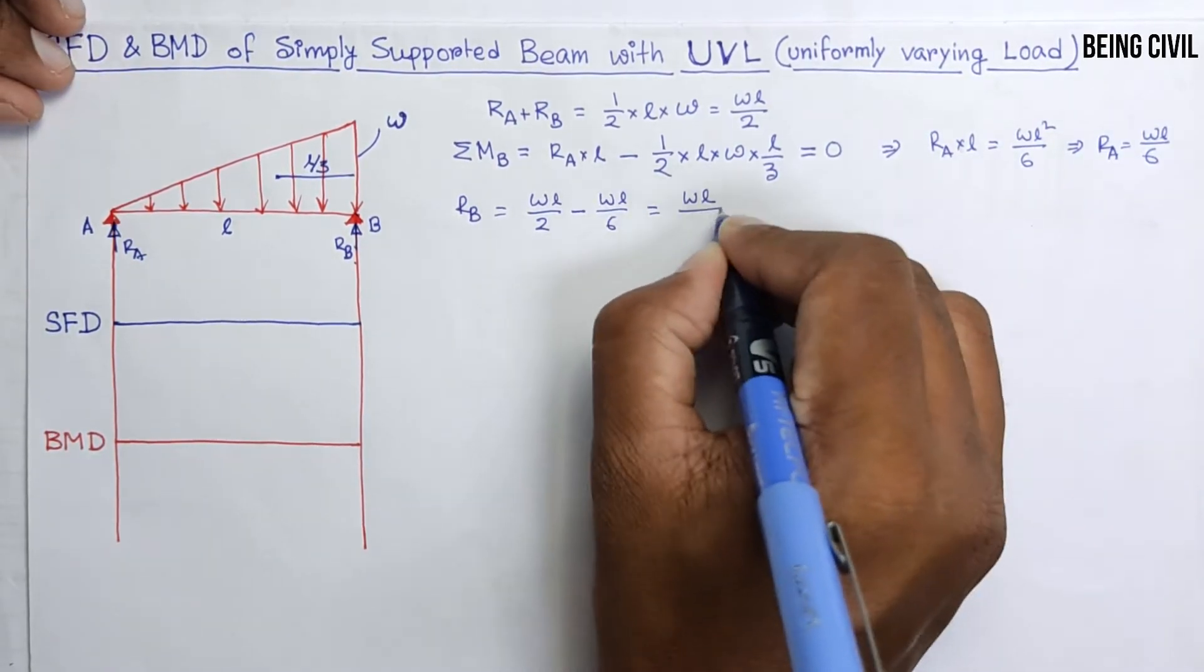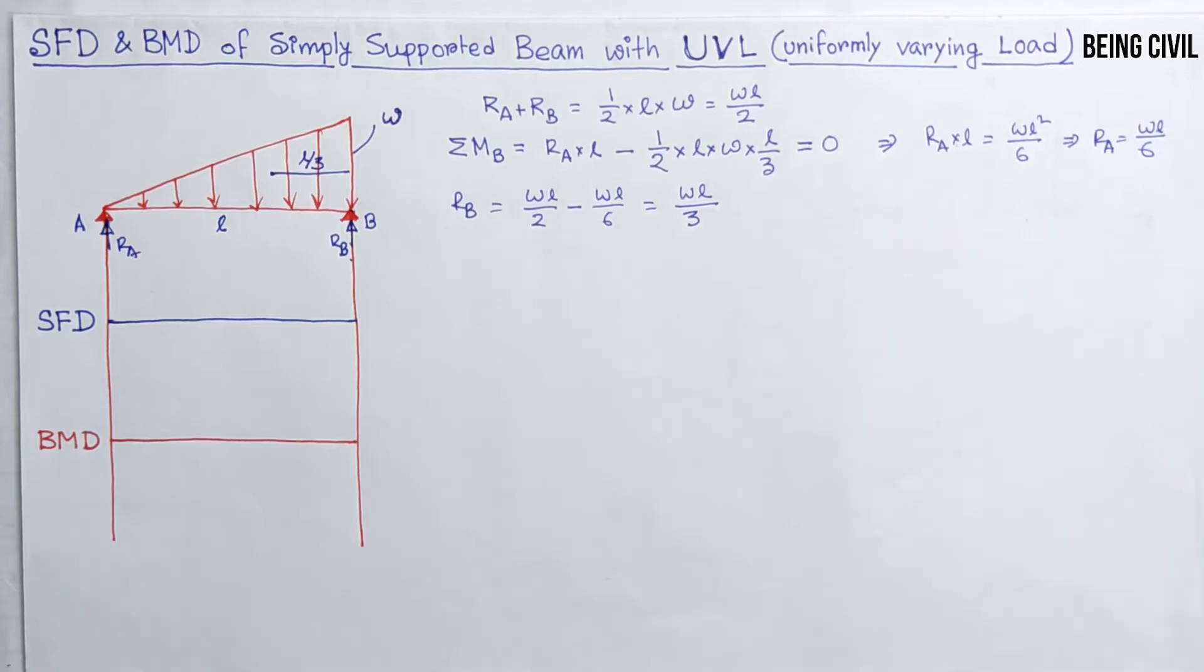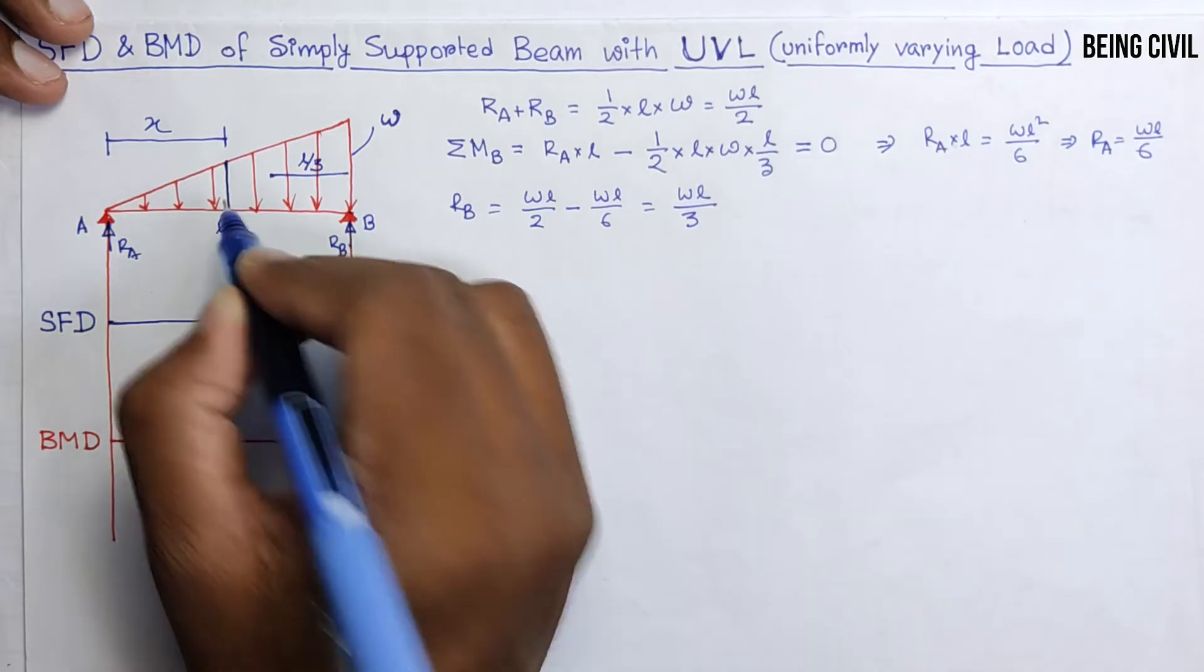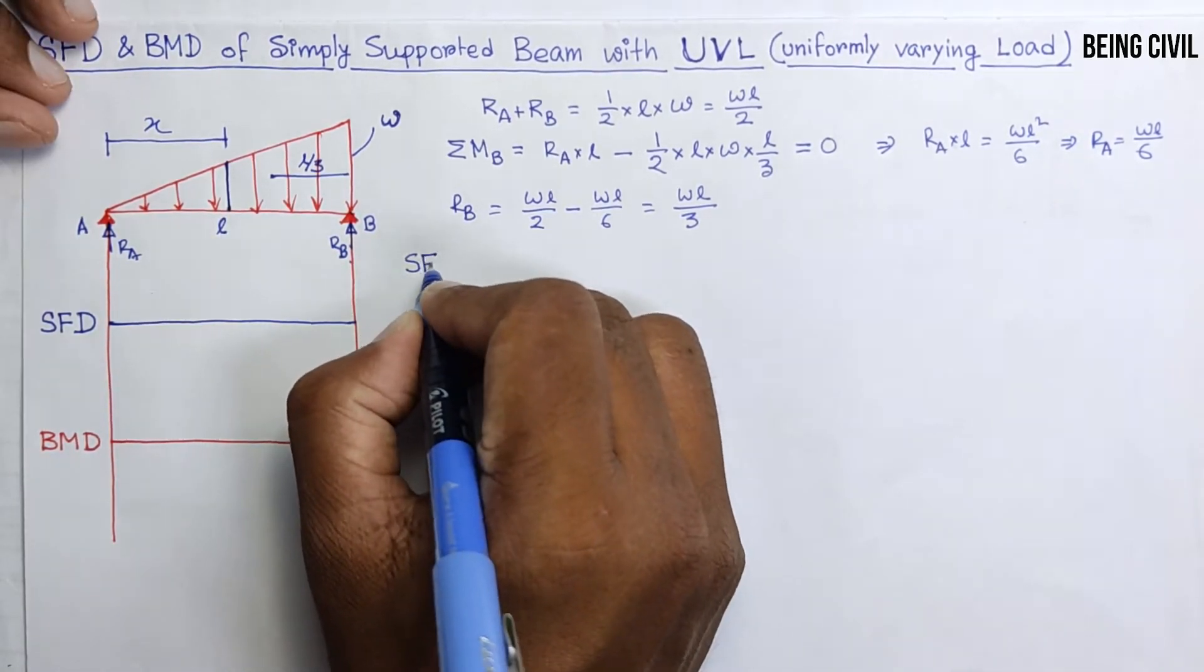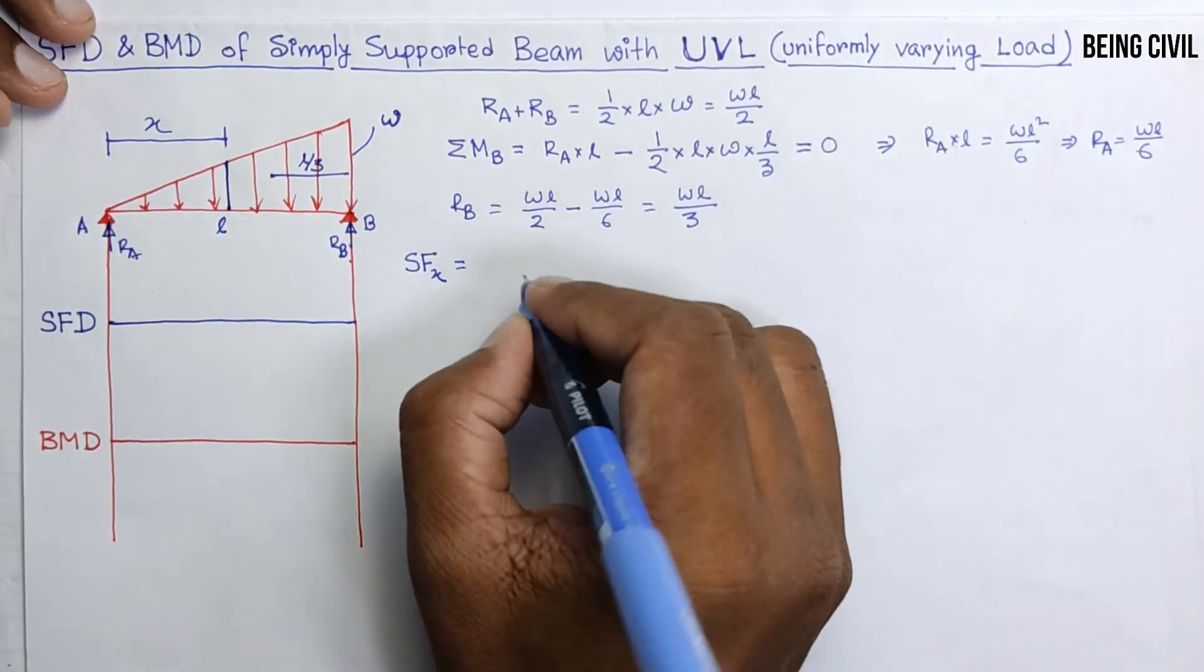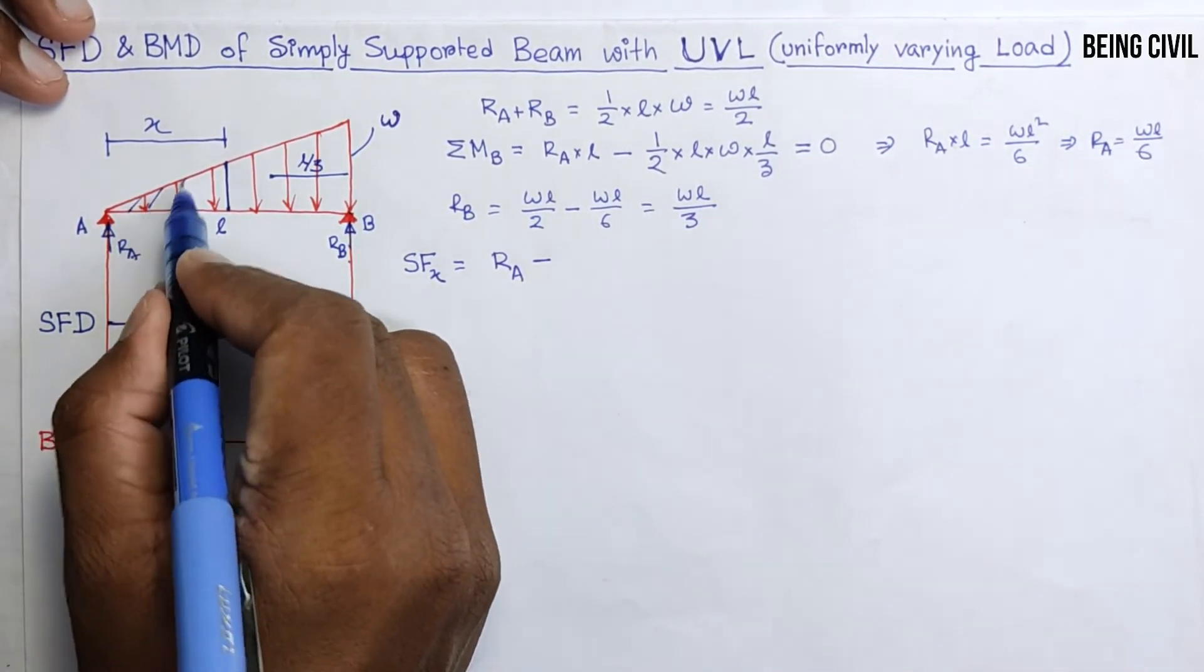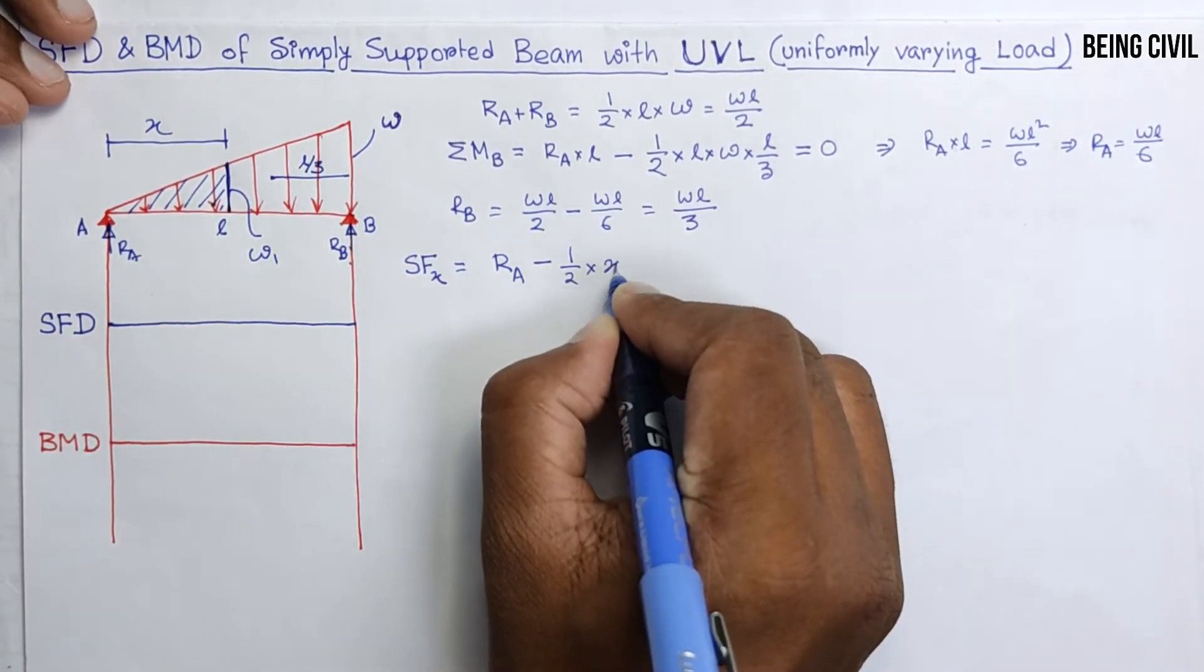Now we have to take a section. This is X and I have to calculate shear force and bending moment at this section. So shear force at any distance X, SFX, will be equal to RA upward minus area of this triangle. Height is W1, half into base is X.